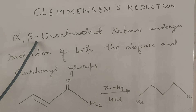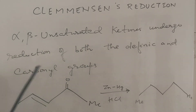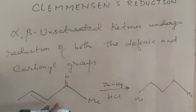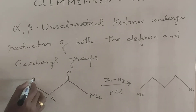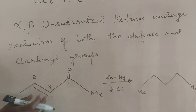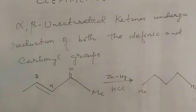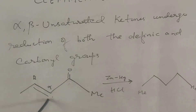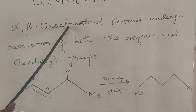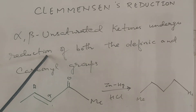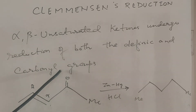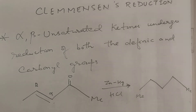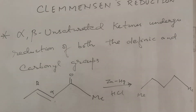Now, alpha-beta unsaturated ketones: this is the alpha carbon and this is the beta carbon. In this case, the carbonyl also gets converted to CH2 and the double bond is also reduced. So alpha-beta unsaturated ketones undergo reduction of both the olefinic and carbonyl groups. That is very important.